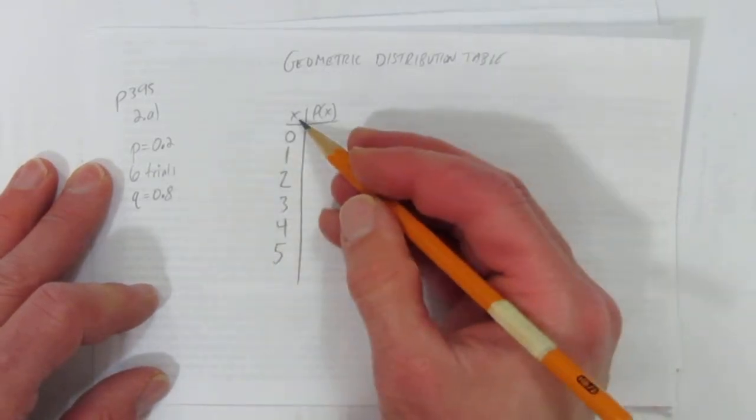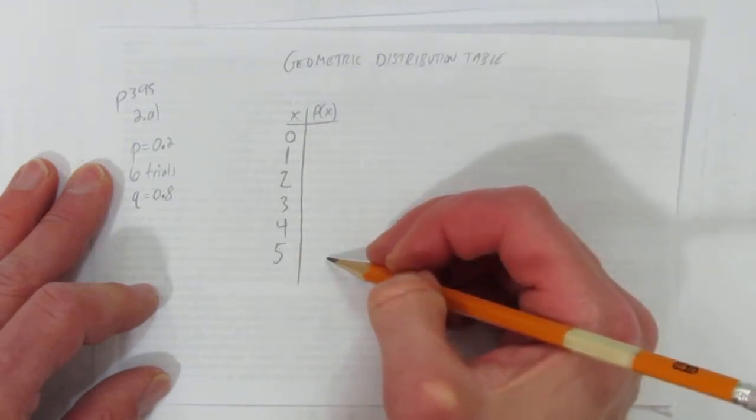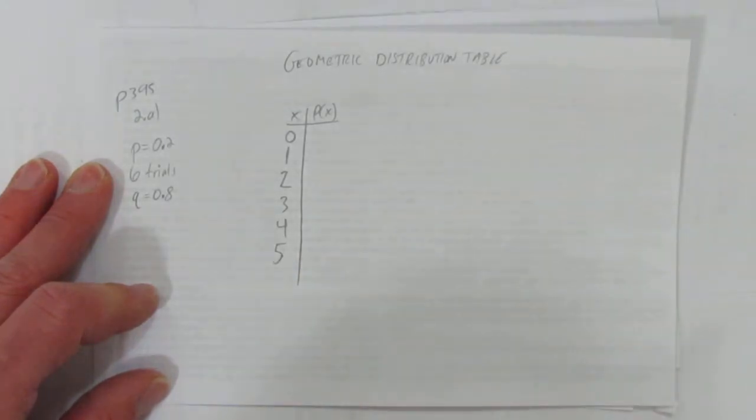And if x is the number of failures, geometric distribution always has this many failures then 1 success. So 5 failures then a success would be our 6 trials. So that's the limit of our table.